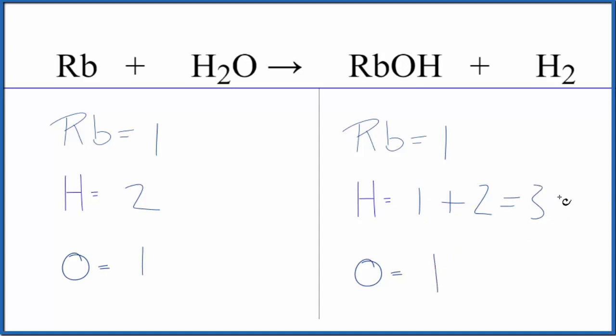It looks like we have this odd number here. When we have an odd number, everything else is balanced. This odd number, we need to get this to be an even number. We can do that by putting a two in front of the RbOH.